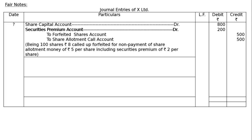Being 100 shares at the rate of Rs.8 called up, forfeited for non-payment of share allotment money of Rs.5 per share, including securities premium of Rs.2 per share.